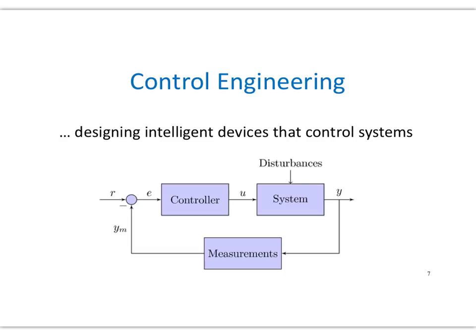The next subsection is control engineering, which is about designing intelligent devices that control systems. This picture illustrates a control system and shows us something important that we do as engineers: we often simplify a system. For example, there's a block that simply says 'system' and we're not interested in the inner workings. We're interested in what output Y we get for an input U. We show only the parts we're interested in, which in this case is the input and the output.